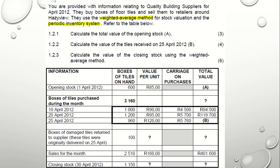We can calculate cost of sales without closing stock. Closing stock will only be calculated when there is stock-taking, which happens after a certain period — in this case, after a month. We need to calculate the value of opening stock, which is A. To calculate A, take the boxes of tiles on hand, which is 600, and multiply that by the value per unit which is 85. So 600 times 85.